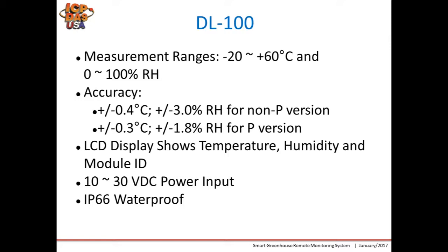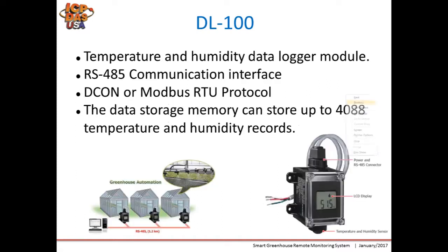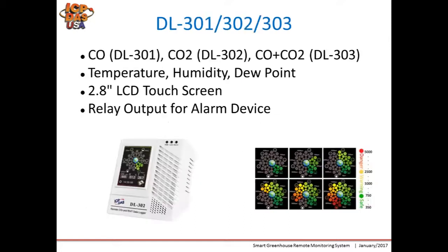The DL100P is the high-precision version. It has an LCD display to show temperature, humidity, and ID. It is also IP66 water- and dust-proof. As shown in the picture, the DL100 can be installed inside the greenhouse.